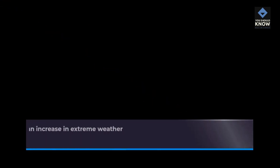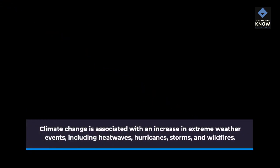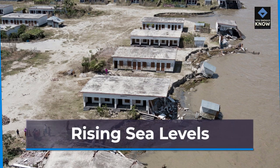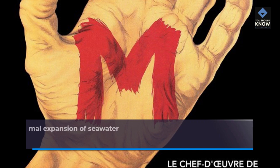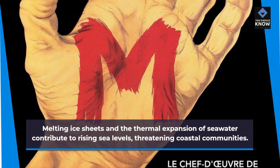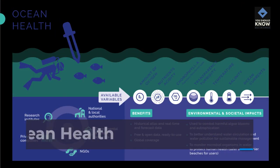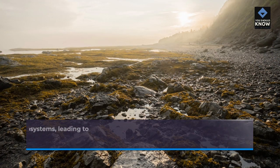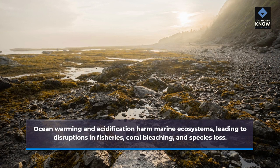Consequences of climate change. Extreme weather events: climate change is associated with an increase in extreme weather events, including heat waves, hurricanes, storms, and wildfires. Rising sea levels: melting ice sheets and the thermal expansion of seawater contribute to rising sea levels, threatening coastal communities. Ocean health: ocean warming and acidification harm marine ecosystems, leading to disruptions in fisheries, coral bleaching, and species loss.